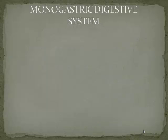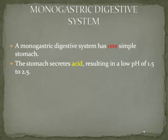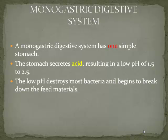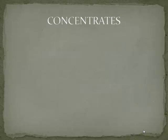In part one of this video, we will be looking at the monogastric digestive system. A monogastric digestive system has one simple stomach. The stomach secretes acid resulting in a low pH of 1.5 to 2.5. The low pH destroys most bacteria and begins to break down the food. Animals with this type of digestive system are better adapted to eat rations high in concentrates.